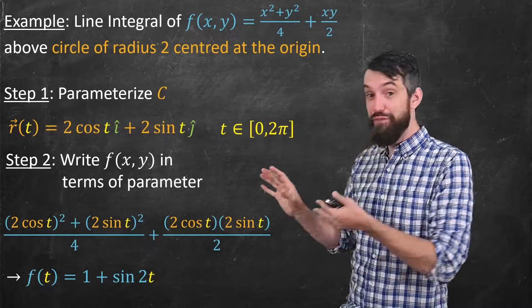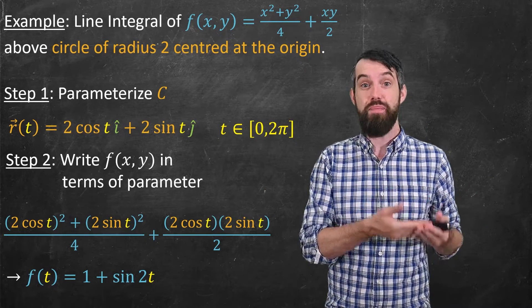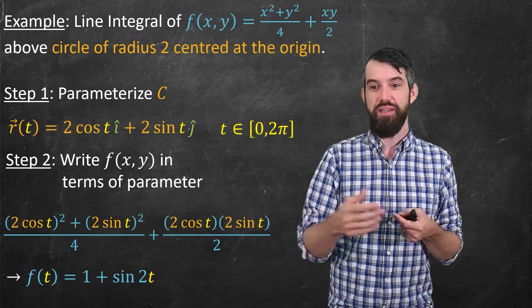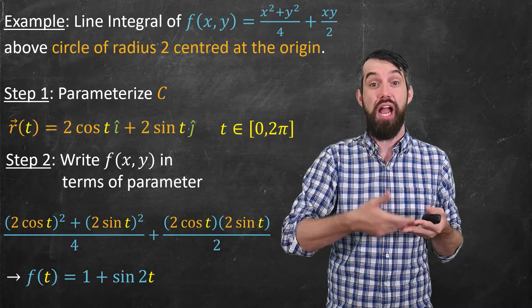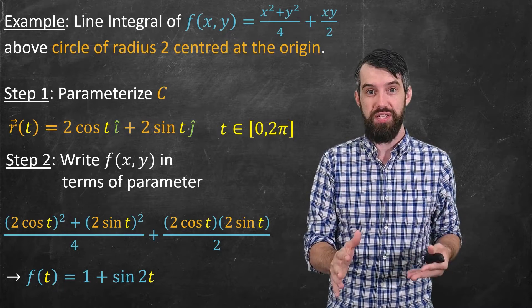Thankfully, this messy formula cleans up really nicely. The cos² plus the sin² collapses by Pythagoras. And then 2sin t cos t is by another trig identity just sin 2t. Nevertheless, I get this much nicer function only of t.